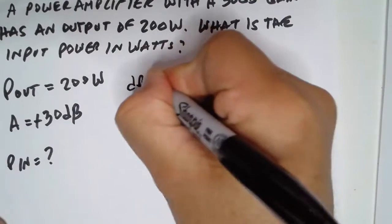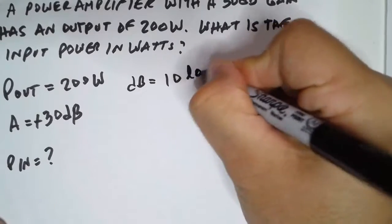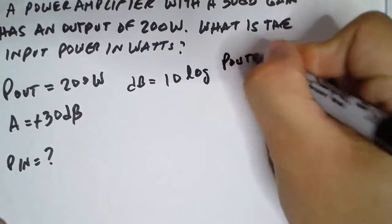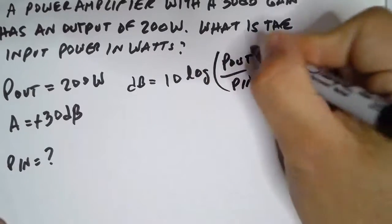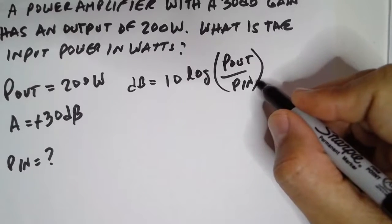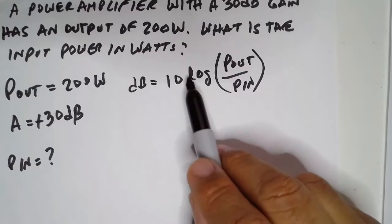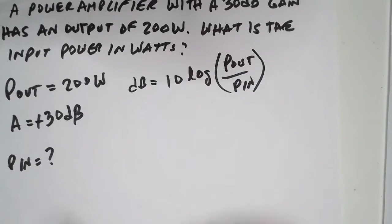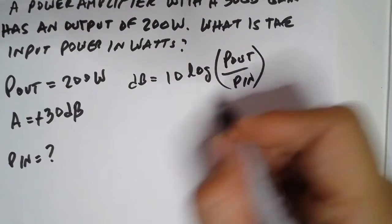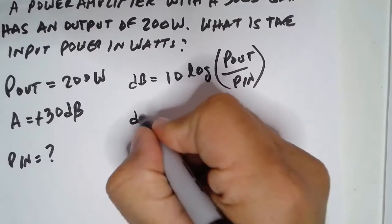For number five, we have dB equals 10 log of the output power to the input power. We need to solve for the input power, and we move the 10 over by dividing both sides of the equation by 10.